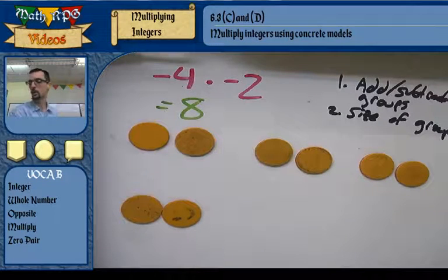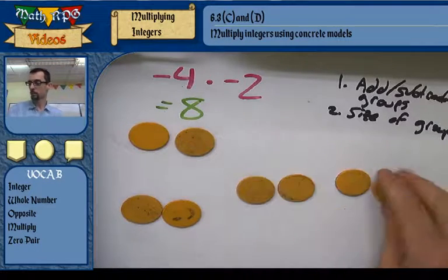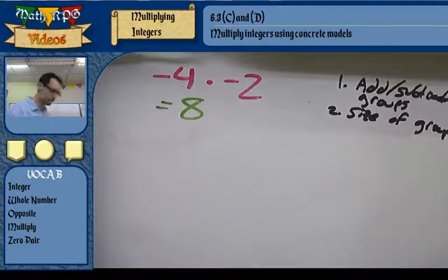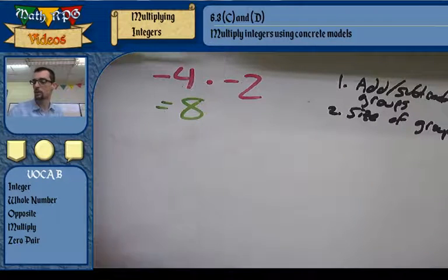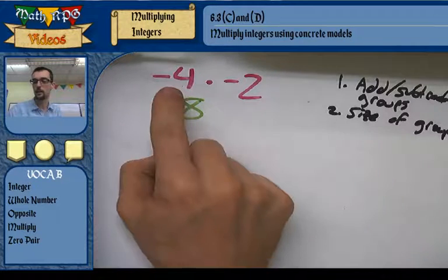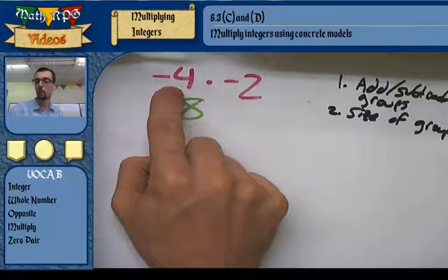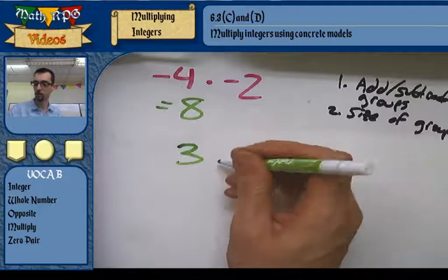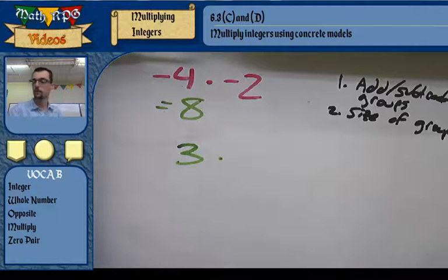That's another way of looking at multiplication of integers using concrete models. In the next video we'll see a shortcut. You can think of the negative sign as meaning 'the opposite of,' or think of it as taking away, while a positive sign means adding — adding three groups of negative 2 versus taking away three groups of negative 2.